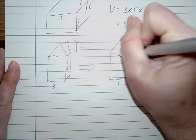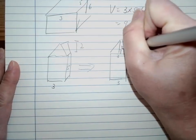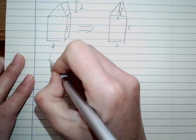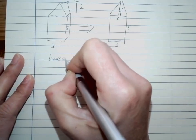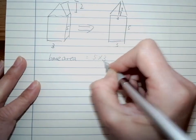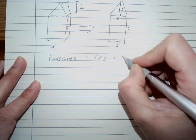So we find the base area will be equals to the bottom bit, five times three, plus the area of the triangle.